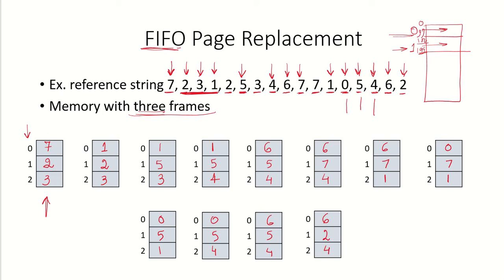If we now count the number of page faults, we can see there are 1, 2, 3, 4, 5, 6, 7, 8, 9, 10, 11, 12, 13, 14 — 14 page faults occurred when the memory had only 3 frames and we were using the FIFO page replacement algorithm.